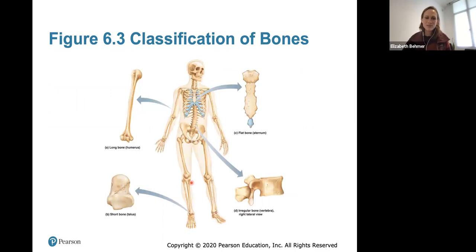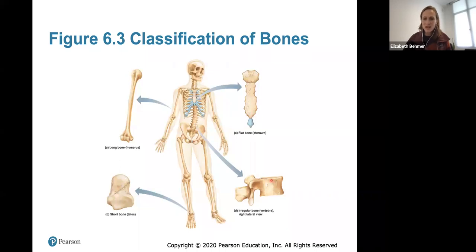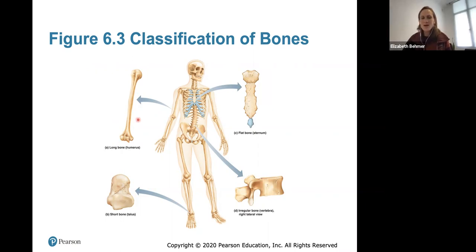Here are examples of each bone type throughout the body. Short bones are found in the ankles and wrists. Flat bones include the sternum and skull. Irregular bones include vertebrae. Long bones include the humerus, radius, tibia, ulna, fibula, and femur — all classified in the long bone category.